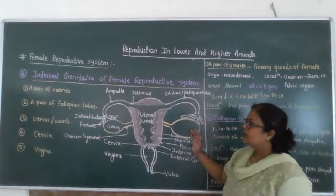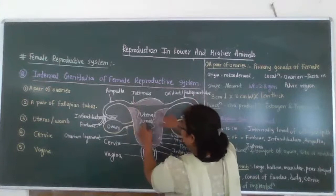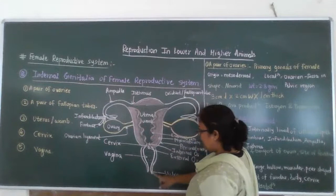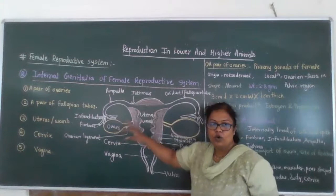Related to the female reproductive system, just take a glance at this diagram. In this you can see a pair of ovaries, a pair of fallopian tubes — also called as oviduct — a uterus also called as womb, then the cervix, then vagina, and externally the vulva. So, the internal genitalia consists of a pair of ovaries.